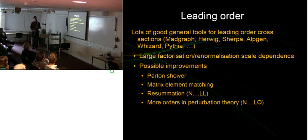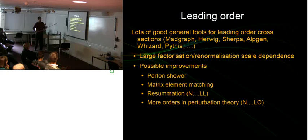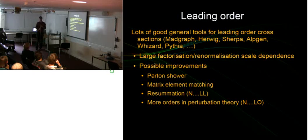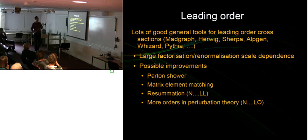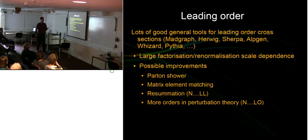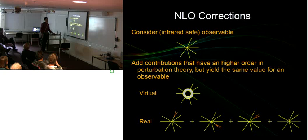The easiest way to get theory predictions is using leading order tools — there are many good ones. But leading order predictions have problems: large factorization and renormalization scale dependence. You can improve them by attaching a parton shower to resum collinear and soft logarithms, doing matrix element matching, some resummation, or adding more orders in perturbation theory — and that's what we are going to do in this talk.